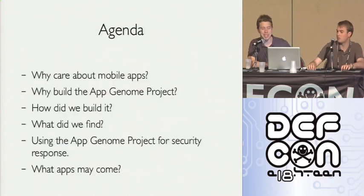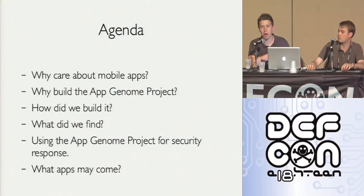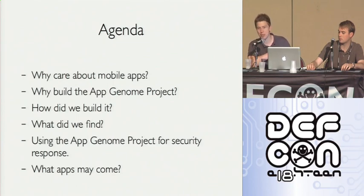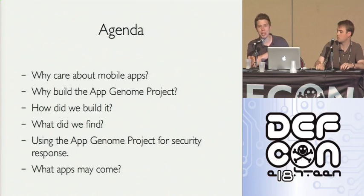Here's what we're going to talk about today: first, why you should care about mobile apps and why you should be skeptical about them; second, what our motivations are; third, how we built the system; and finally, what we found. Specifically, I'm going to tell four stories. We'll also discuss how we can use the App Genome Project in a security response context — since many of you here disclose vulnerabilities, and a key question about disclosure timing is whether there's exploitation in the wild.